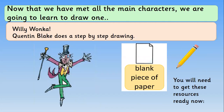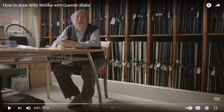We're going to need pencil and paper ready now because we've met all the main characters of the story. We're going to learn how to draw one of them — we're going to draw Willy Wonka, and Quentin Blake is going to do a step-by-step drawing for us. We're going to pause it alongside Quentin Blake to do the best drawing we possibly can. Pause the screen now, go and get your piece of paper and pencil ready, and then let's listen really carefully and watch how Quentin Blake does his drawings.